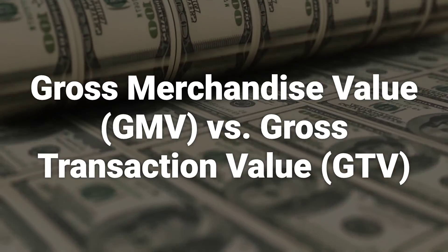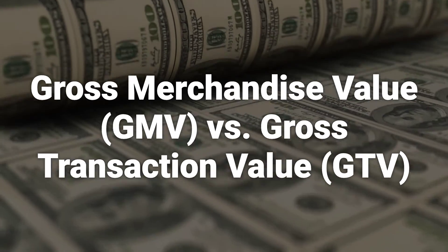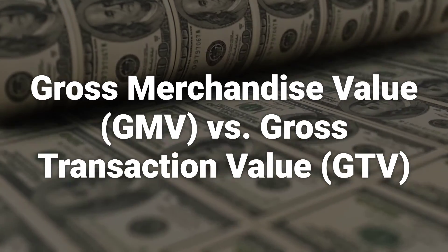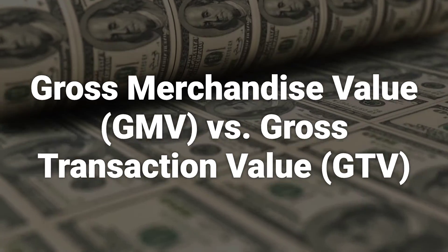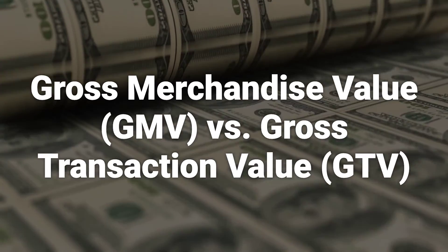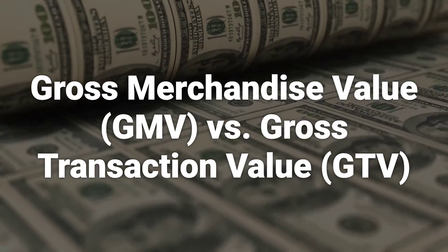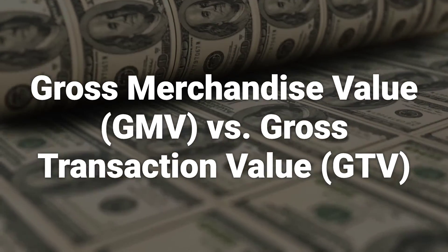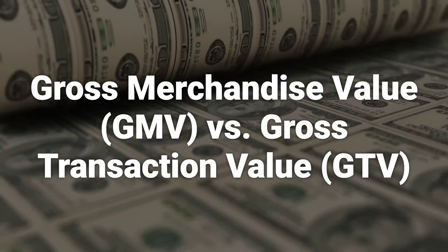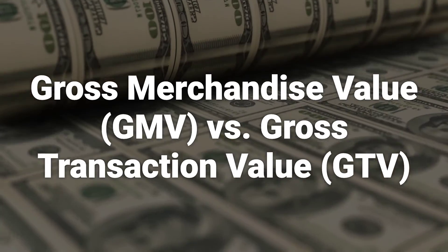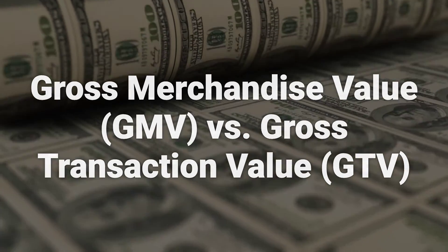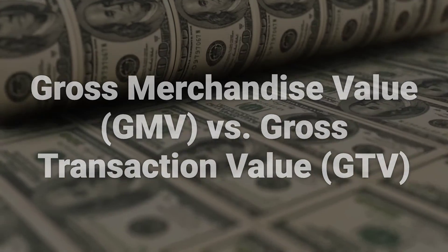GMV refers to the total value of everything sold through a marketplace in a given period of time, while gross transaction value, GTV, is a calculation of the revenue in relation to commissions. GTV is used more in businesses that operate on commissions.